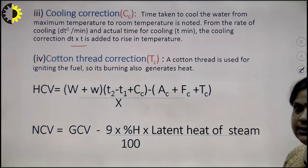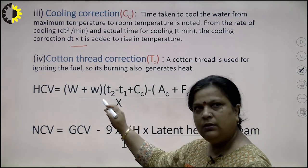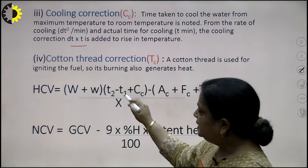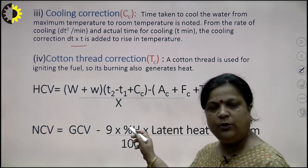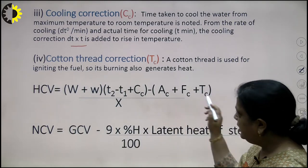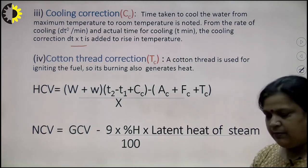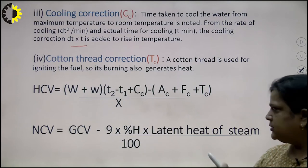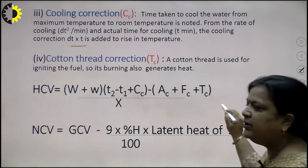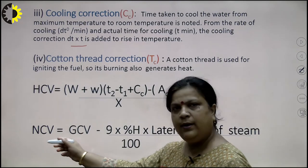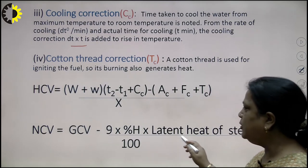Considering all four corrections, the exact formula for GCV or HCV is: GCV = [(W + w) × (T2 − T1 + cooling correction) − (acid correction + fused wire correction + cotton thread correction)] / x. The cooling correction (in °C) is added to the rise in temperature, while the remaining corrections (in calories) are subtracted. For NCV or LCV: NCV = GCV − 9 × (H/100) × latent heat of steam.